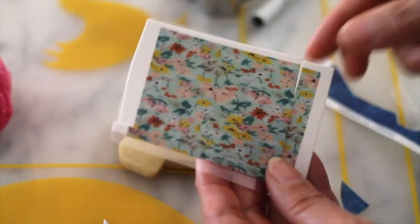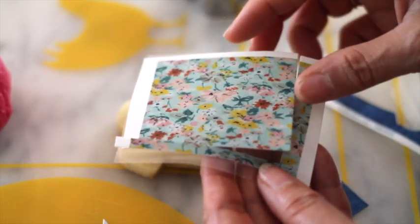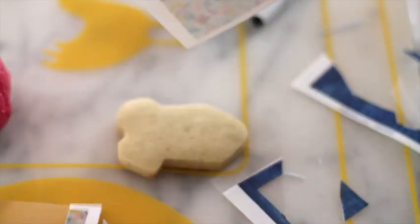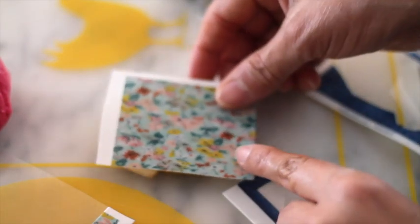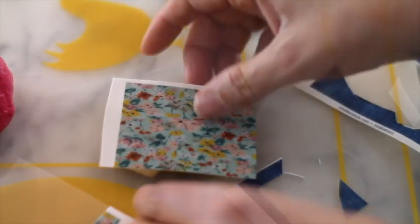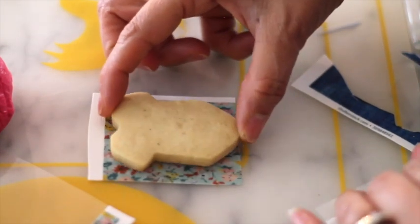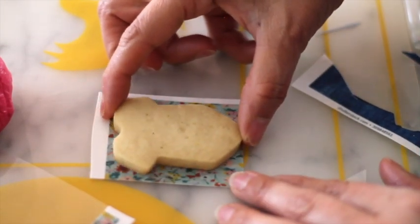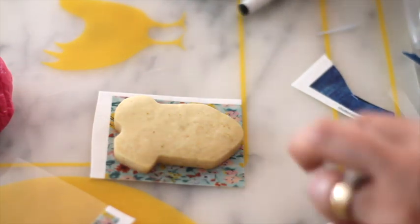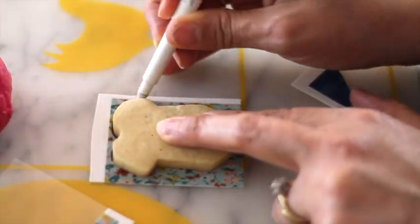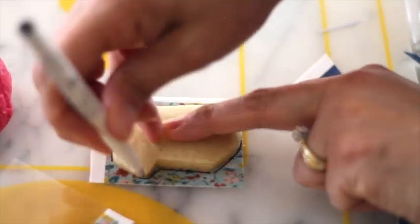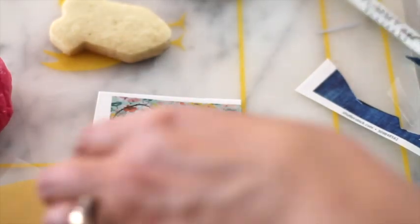This is the edible image and I just printed it. I'm going to take it out from the plastic and then put it over my cookie. The way that I'm going to do it is I'm going to use my cookie as the template so it will be the same size as my cookie.